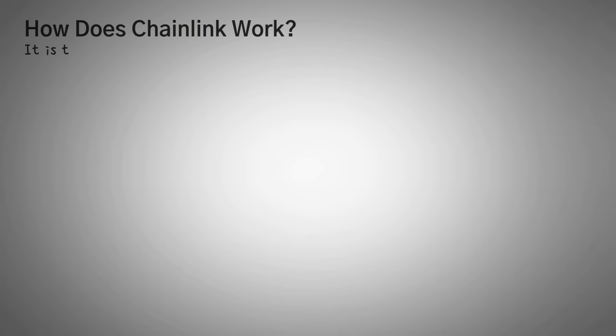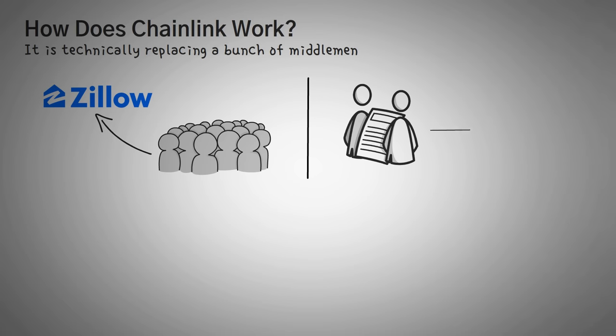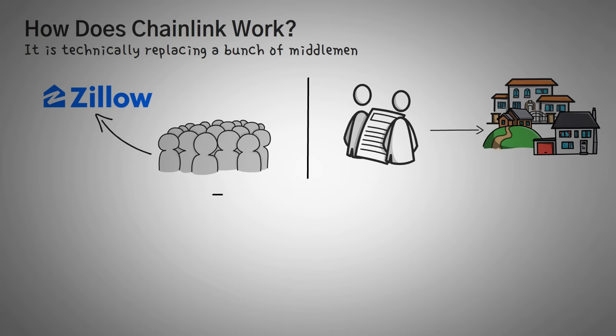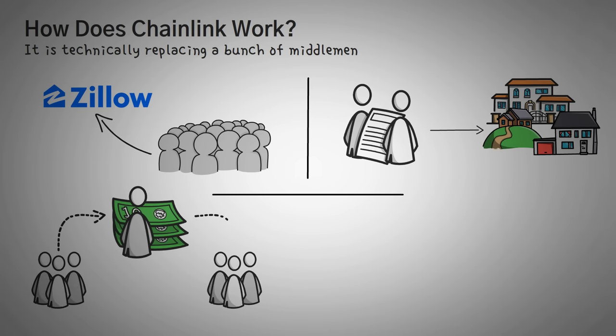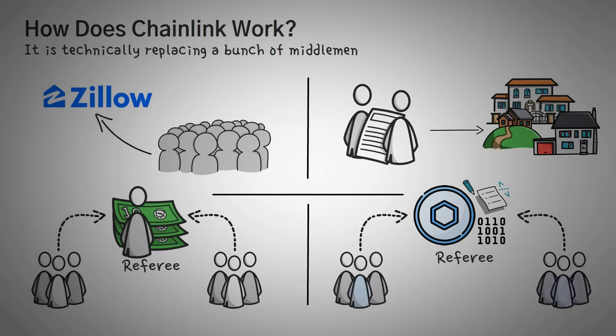Now the first thing you must understand with Chainlink is that it is technically replacing a bunch of middlemen. Think about a real estate agent. Nowadays, a lot of people just go to a website like Zillow, find the house that they want, and then move forward with that process, opposed to hiring an agent to show them eight different houses. The same is true with a travel agent. They are a middleman. Even more so, let's refer back to our sports betting example. Someone is collecting money on both sides of the bet and also being a referee to decide who gets the winnings. Well, Chainlink's oracles and the use of smart contracts will replace all of these people with code. Now the way they do that is very complicated, but here's how it works.